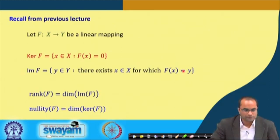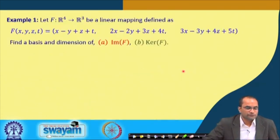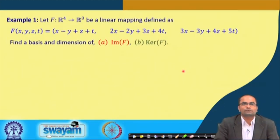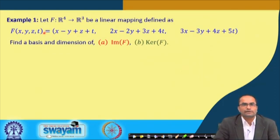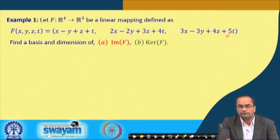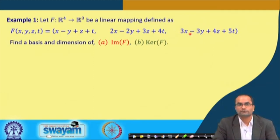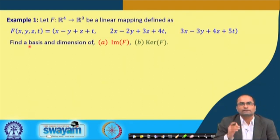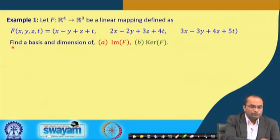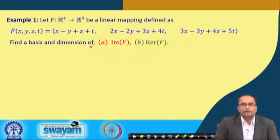The rank of f is the dimension of the image of f, and the nullity is the dimension of the kernel of f. With these definitions we start with the example where f is a linear map from R4 to R3, defined by f mapping (x, y, z, t) to the three components: x minus y plus z plus t; 2x minus 2y plus 3z plus 4t; and 3x minus 3y plus 4z plus 5t.